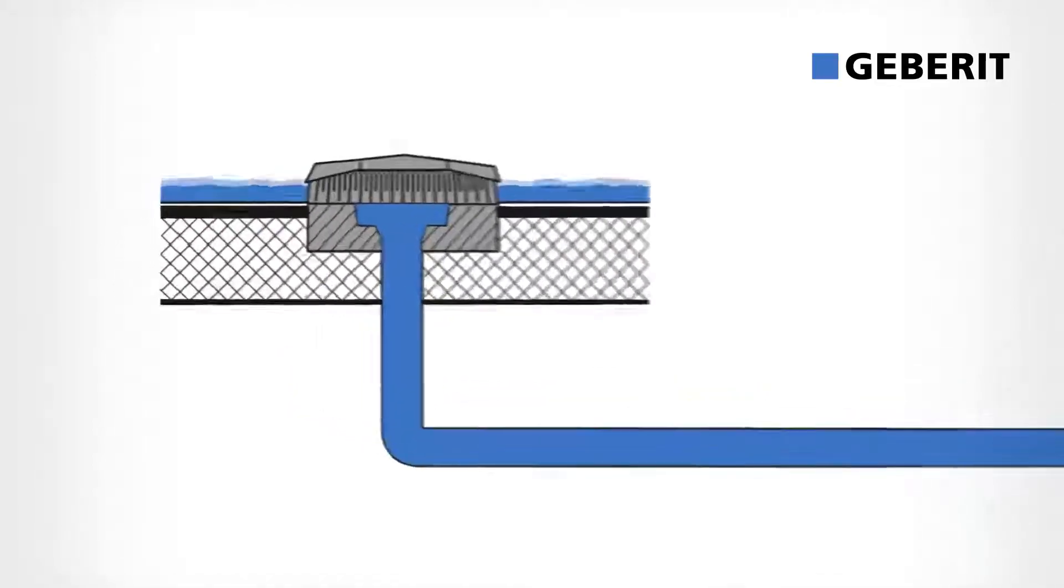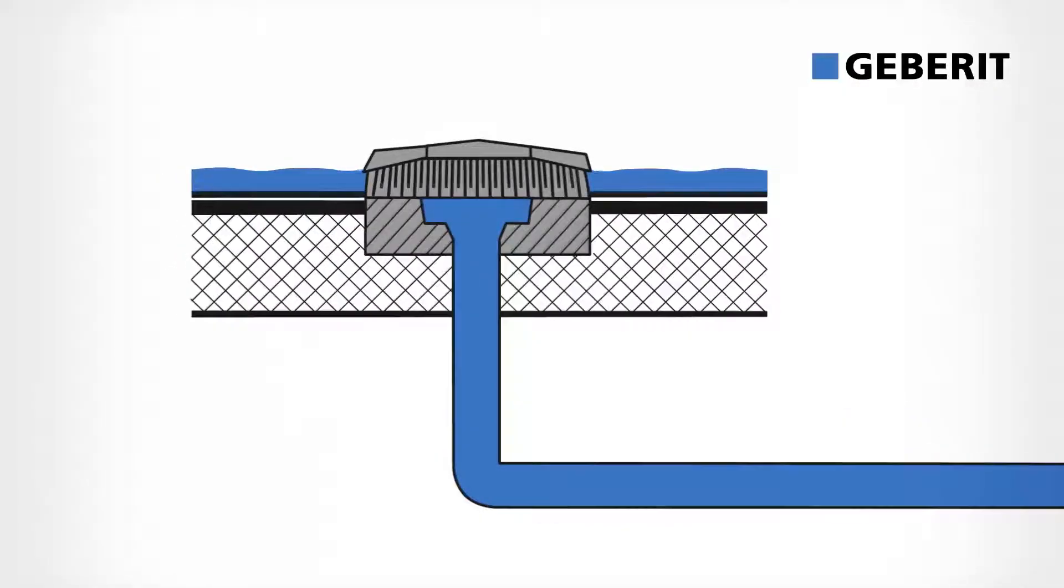Geberit Pluvia roof outlets make sure that all the rainwater drains off without interruption of the suction effect. And that's not all. The high flow velocity ensures that the system is self-cleaning. This cuts down on cleaning and maintenance costs.